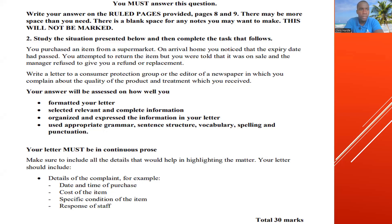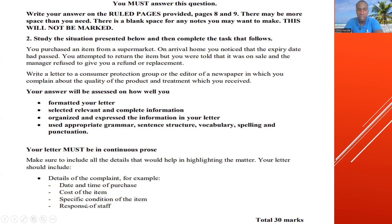Here's a scenario. You purchase an item from a supermarket. On arrival home, you notice that the expiry date had passed. You attempted to return the item but were told that it was on sale, and the manager refused to give you a refund or replacement. Write a letter to a consumer protection group or the editor of a newspaper in which you complain about the quality of the product and the treatment you received. They literally give you everything that you need to include in the letter — you just need to format it appropriately.